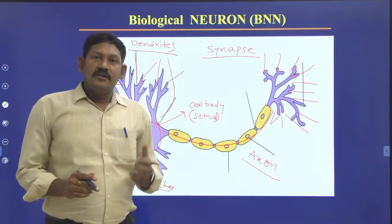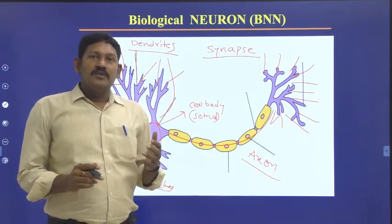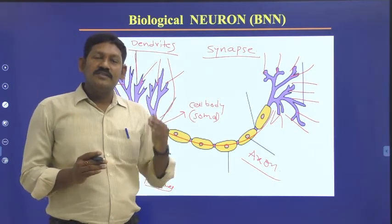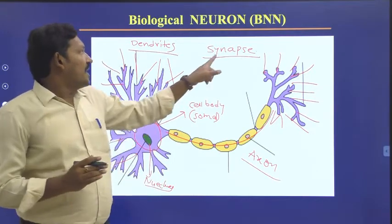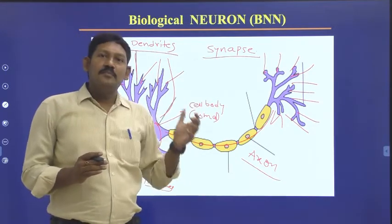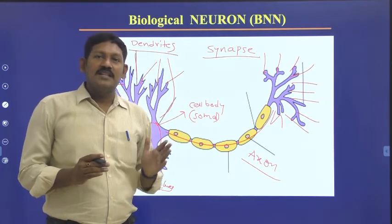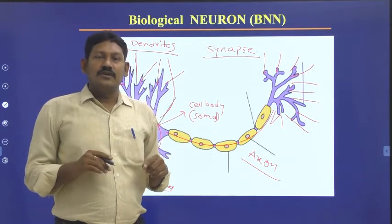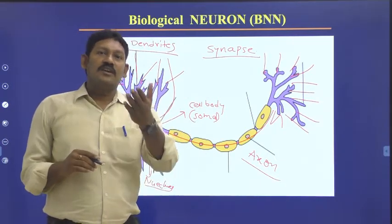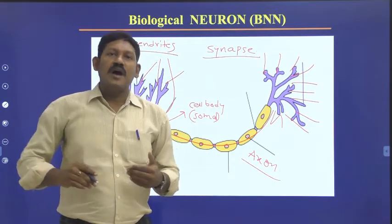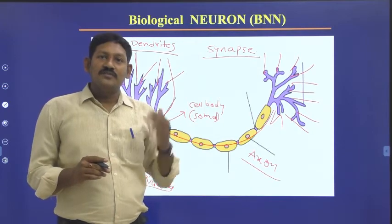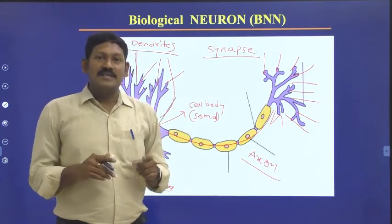Whatever information we store inside the brain, that will be stored in the synapse. As we keep on increasing the storage in our brain, the synapse will keep on strengthening. Synapse is the place where two neurons are connected. Inside the human brain we have billions of neurons, and thereby billions of synapses. For example, if anyone asks your father's name or grandfather's name, you are able to answer because that information is stored very strongly in the synapse.